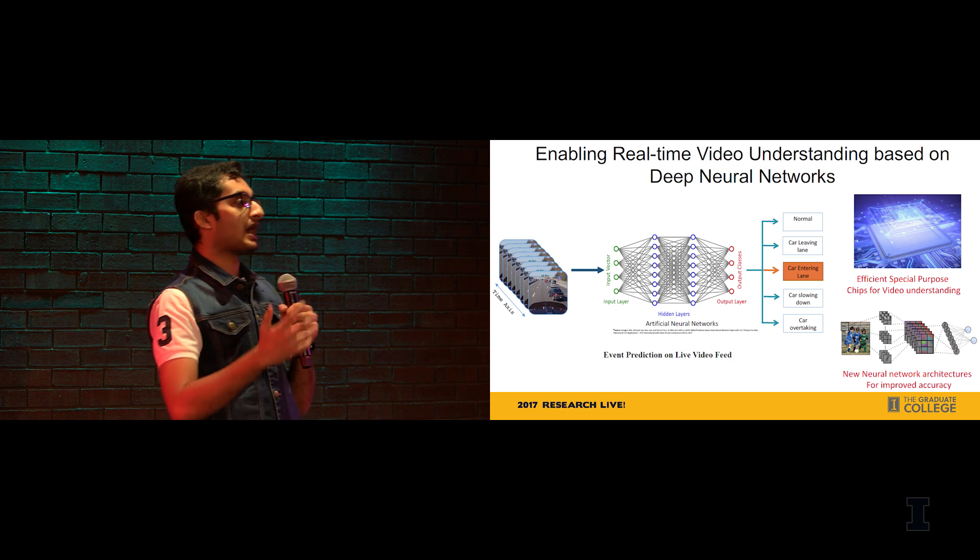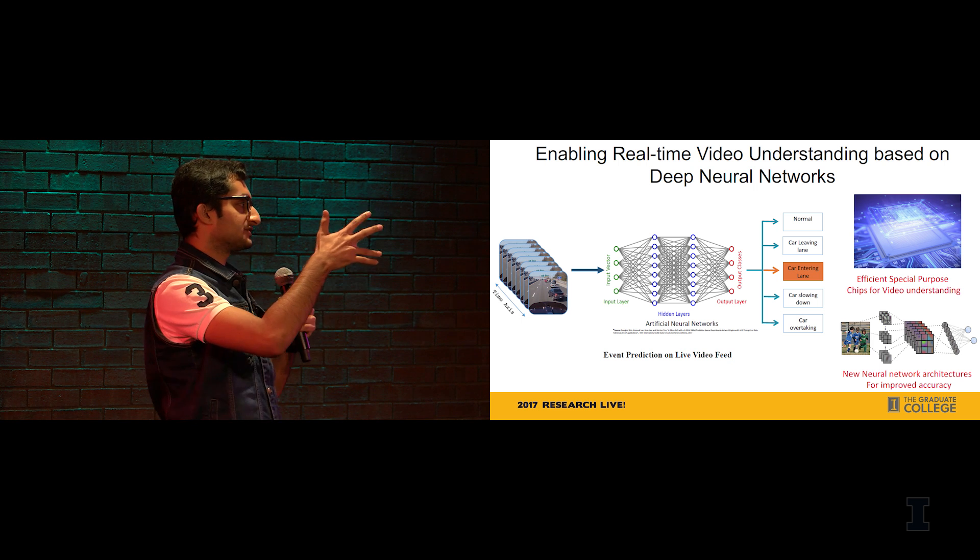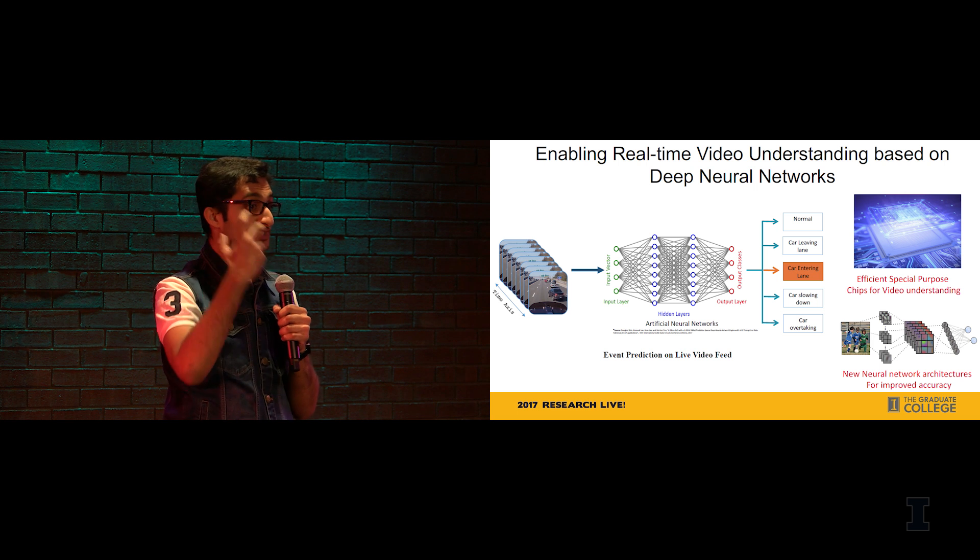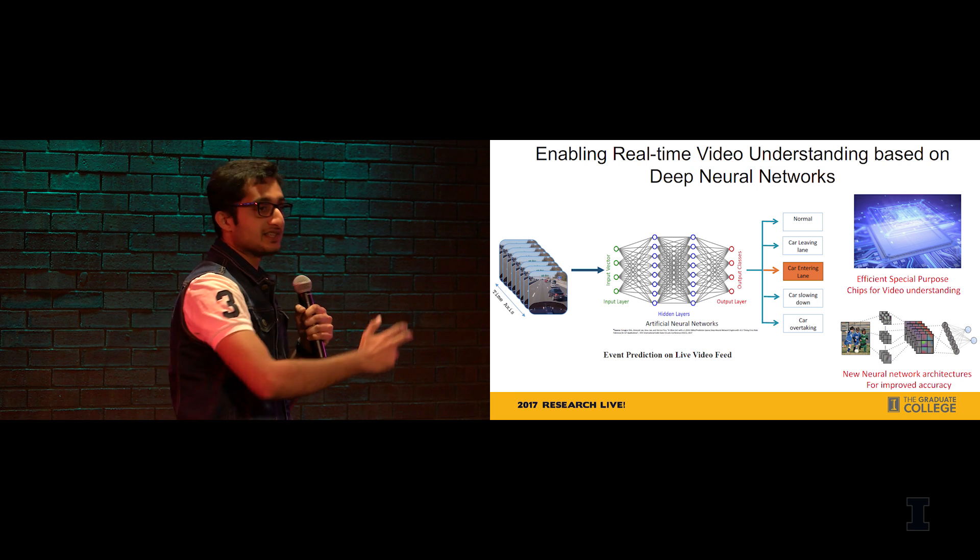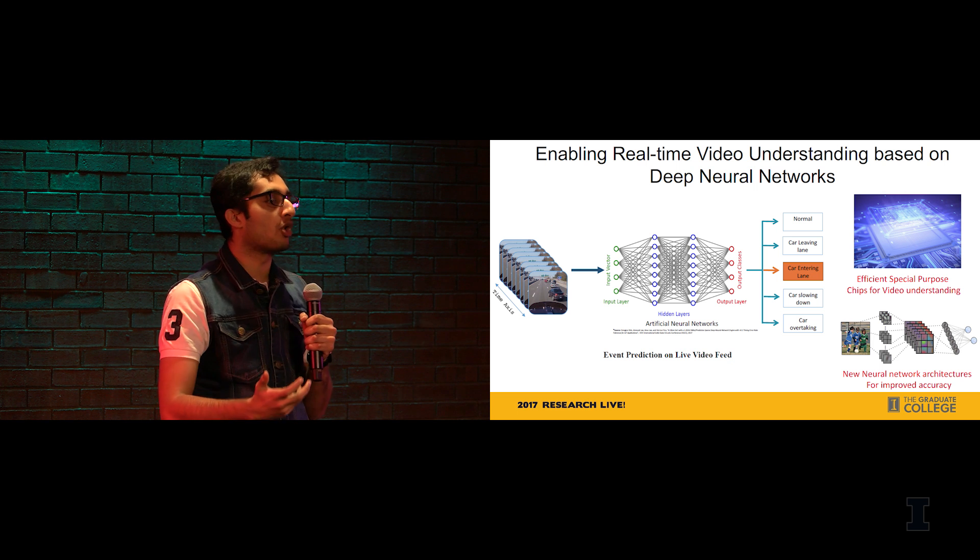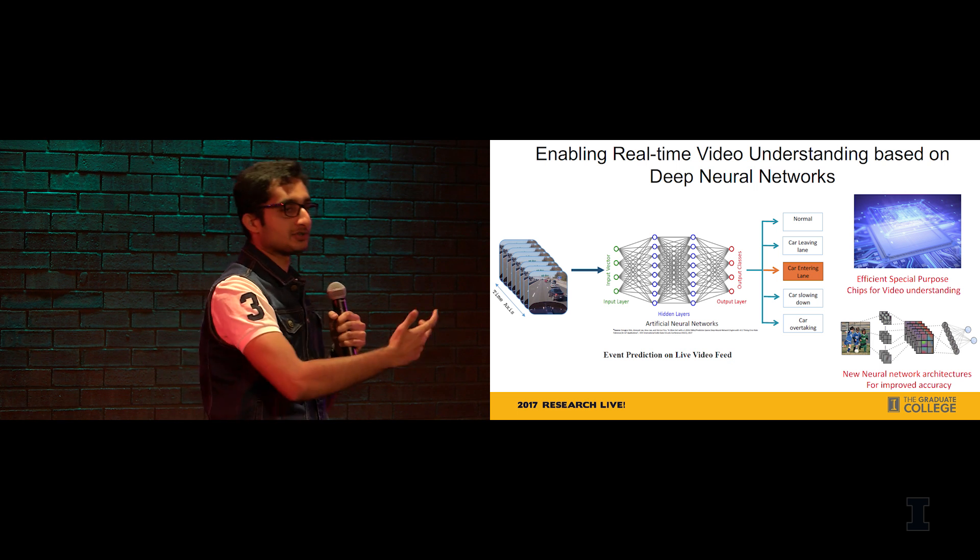Given this background, our research here at Illinois focuses on two specific things. One is to build special purpose chips which are designed to do just this, which makes them fast and efficient. Another is to build new neural network models which take less time to process these videos.